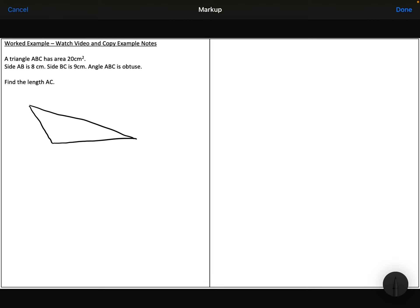Remember, obtuse means bigger than 90, but less than 180. So I'm told that side AB is 8, side BC is 9,